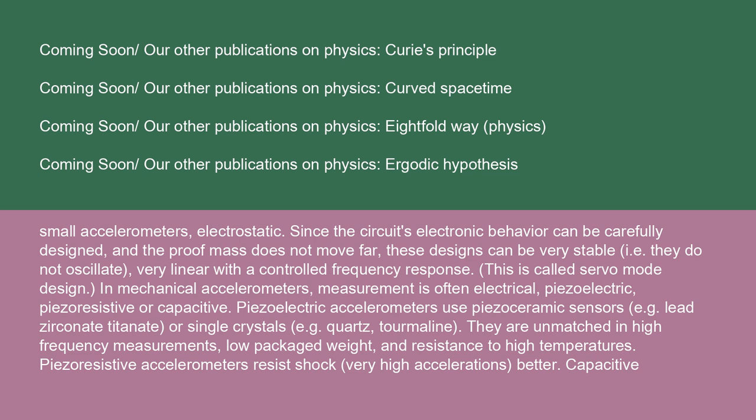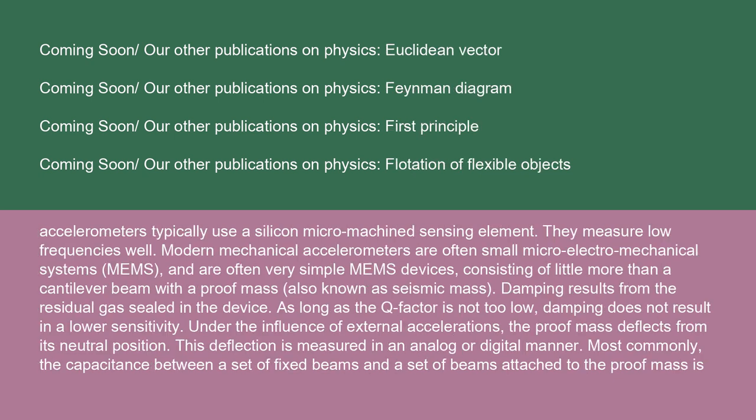In mechanical accelerometers, measurement is often electrical: piezoelectric, piezo-resistive, or capacitive. Piezoelectric accelerometers use piezo-ceramic sensors such as lead zirconate titanate, or single crystals such as quartz or tourmaline. They are unmatched in high-frequency measurements, low packaged weight, and resistance to high temperatures. Piezo-resistive accelerometers resist shock and very high accelerations better. Capacitive accelerometers typically use a silicon micromachine sensing element and measure low frequencies well.